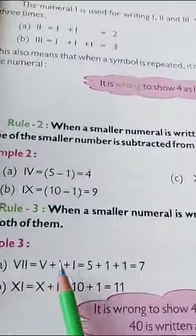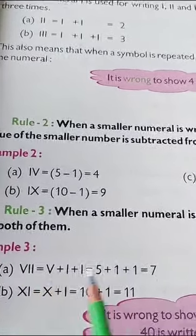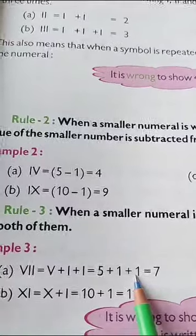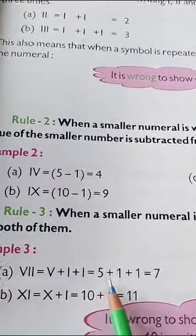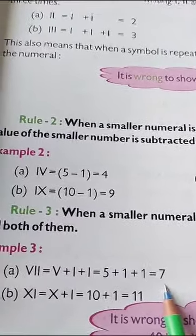Now see, V means 5, I means 1. Again one more I. Then again, we will add one more 1. So 5 plus 1 plus 1 is equal to 7. Okay?